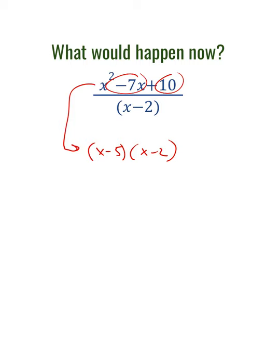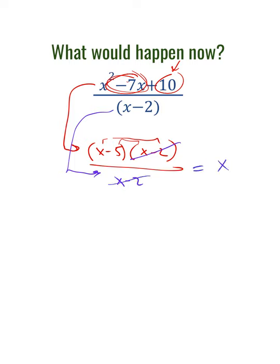Outside would be negative 2x and negative 5x, which is negative 7x when you add them up. Our denominator is still x minus 2, which was the original denominator. When we look at this, we see an x minus 2 in the numerator and an x minus 2 in the denominator, so we are simply down to x minus 5 for our final answer.